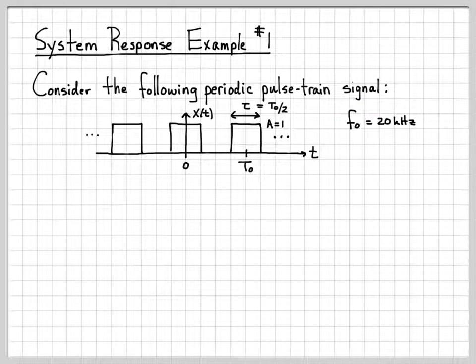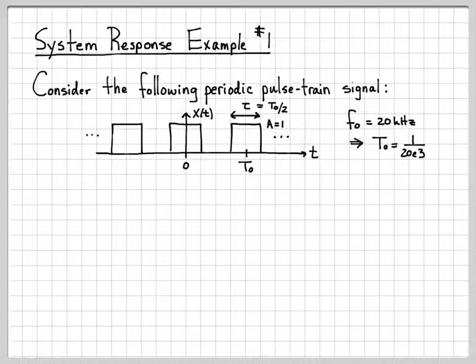Some more specifics about this pulse train. I'm going to tell you that the fundamental frequency of the pulse train is 20 kilohertz. So based on that fundamental frequency, we can compute what t0 is. T0 is always 1 over f0. So t0, the period of this periodic signal, is 1 over 20E3, because 20 kilohertz is 20E3 hertz. So that is how often a pulse comes through.